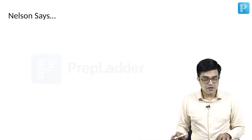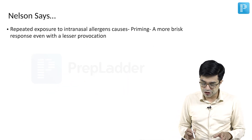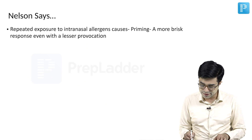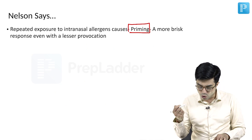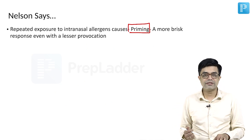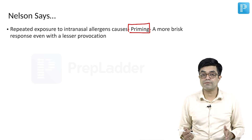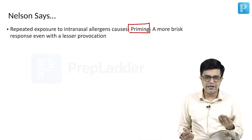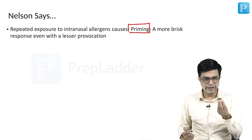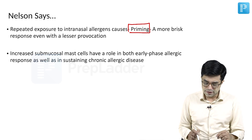Nelson also says that repeated exposure to intranasal allergens causes a thing called priming. What is priming? A more brisk response is seen even with less provocation. So if there is very repeated exposure to allergen, even a small amount of allergen will precipitate the reaction.